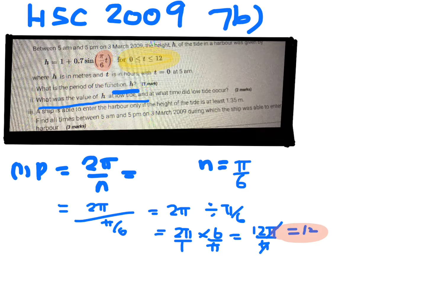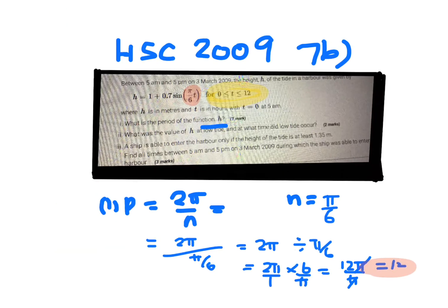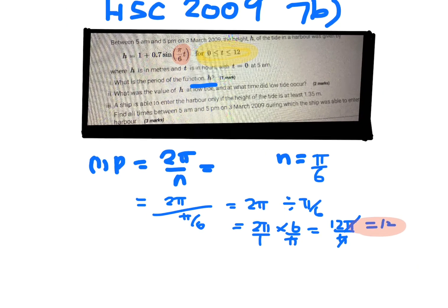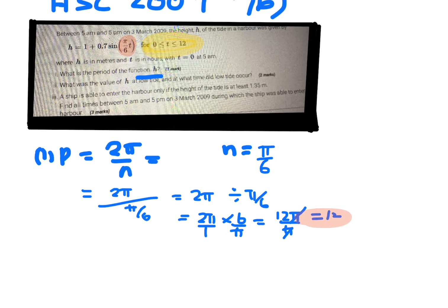What is the value of h at low tide and at what time does the low tide occur? So the best way to attack this is actually to be able to sketch it. If you can sketch this curve, so you can sketch h equals 1 plus 0.7 sine π on 6t.